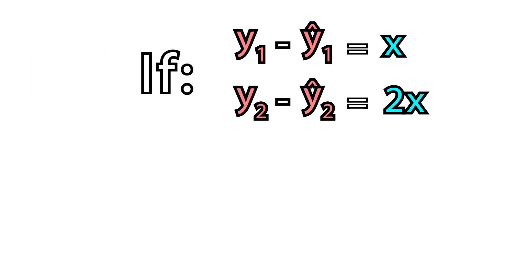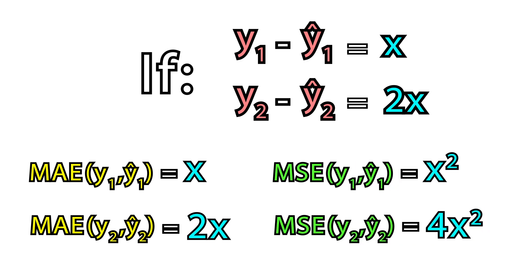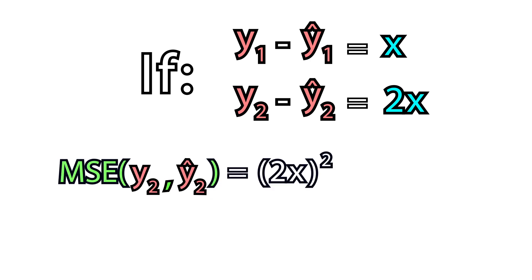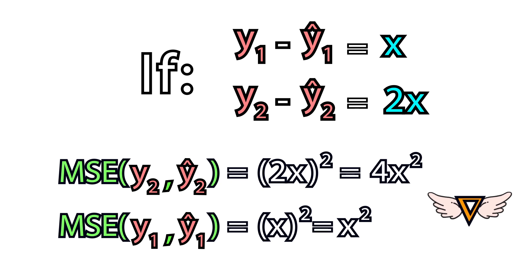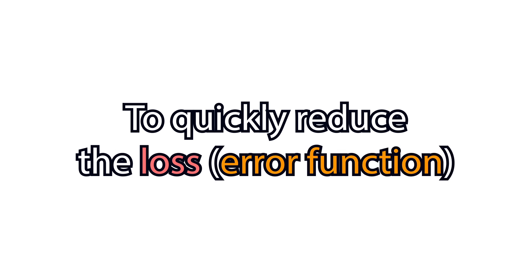Let's see how they are different. So, if for the absolute error, one error is two times larger than the other one, for the mean squared error, the difference is four times. The square magnifies larger errors. So, intuitively, gradient descent will make more significant changes to the model to reduce those larger errors first, to quickly reduce the error with a larger amount.